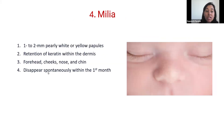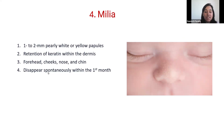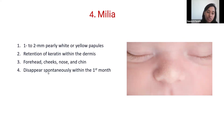The fourth one is milia. These are tiny pearly white or yellow papules seen around the nose. They are retention of keratin within the dermis. They commonly involve the face — the forehead, nose, cheek, and chin are even more common sites. They spontaneously disappear within the first month of life; nothing needs to be done.